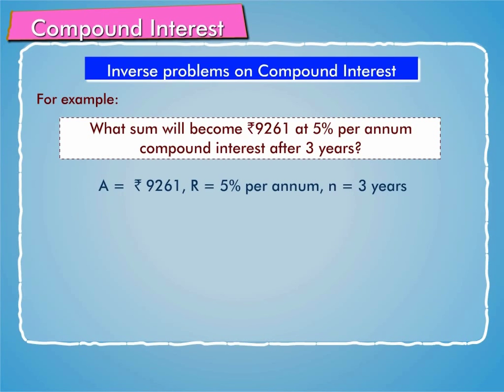Here, A is equal to Rs. 9,261, R is equal to 5% per annum, and n is equal to 3 years.